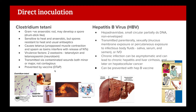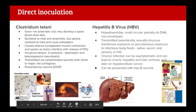Hepatitis B virus (HBV): Hepadnaviridae, small circular partially double-stranded DNA, non-enveloped. Transmitted parenterally, sexually (it's an STI), or through intravenous drug use. Chronic infection can be asymptomatic but can progress to chronic hepatitis, then cirrhosis with significant scar tissue, and eventually hepatocellular carcinoma (liver cancer). Preventable with the Hepatitis B vaccine.